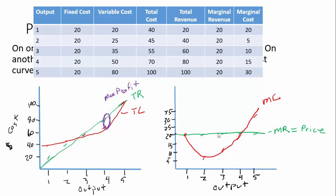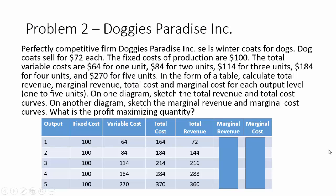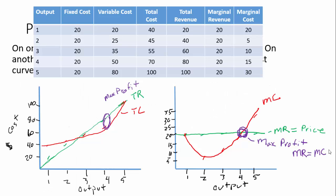Our marginal cost curve slopes down then goes up. Right around output of four, this is where our profit maximization happens — this is max profit. That matches what we saw in the total revenue and total cost curves. The rule is: maximum profit is where marginal revenue equals marginal cost. You don't want marginal cost exceeding marginal revenue. The output level that gives us maximum profit is four; once we hit five, that's too much.